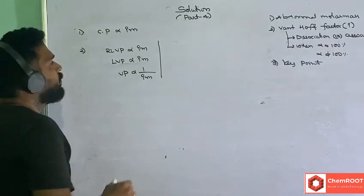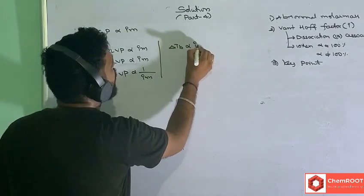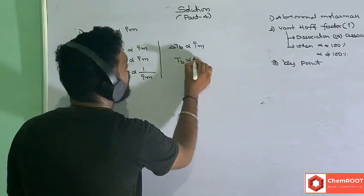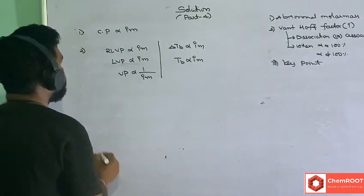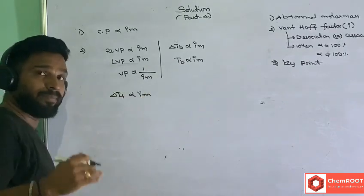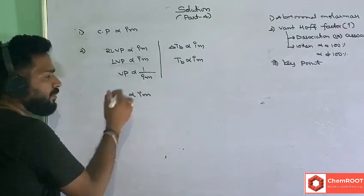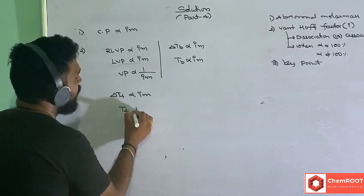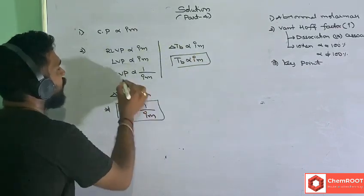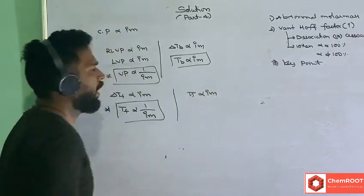Elevation in boiling point (ΔTb) is directly proportional to i × m. If i value increases, the boiling point increases. Depression in freezing point (ΔTf) is also directly proportional to i × m. As the freezing point decreases with increasing i value, the freezing point itself is inversely proportional to i × m. Osmotic pressure is directly proportional to i × m.